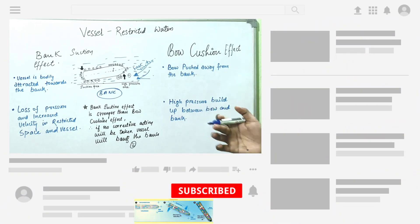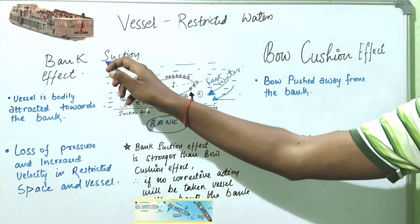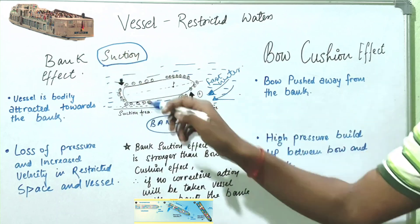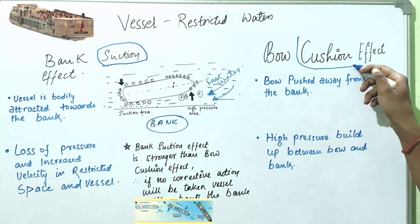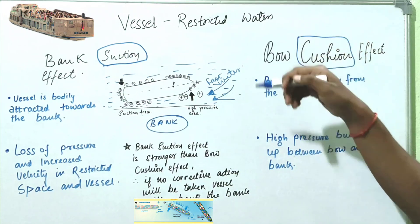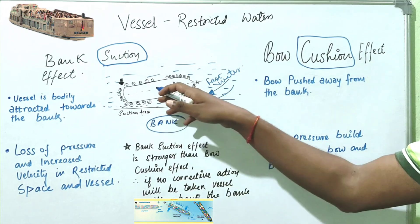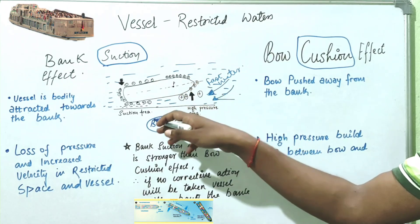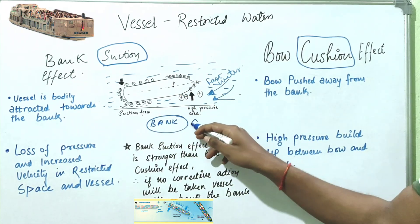Hello and welcome. In this video I'm going to discuss the difference between bank suction effect and bow cushion effect. This is a vessel, this is the pivot point of the vessel, and this is the bank — or you can say shore.